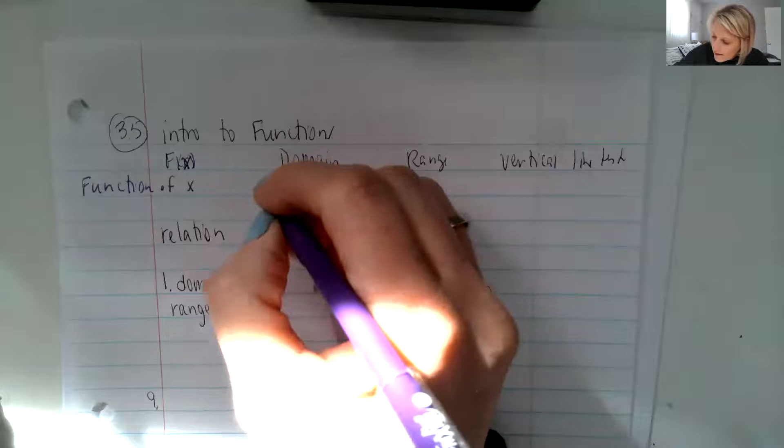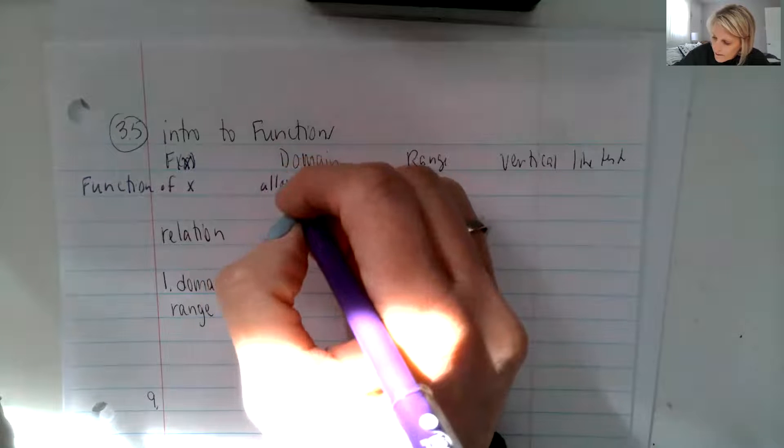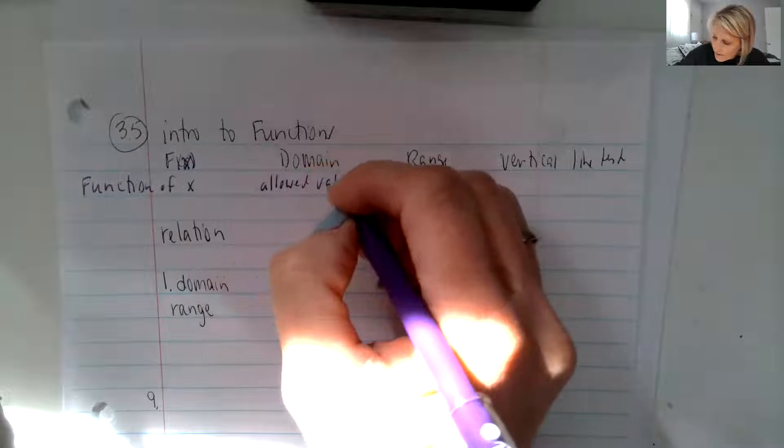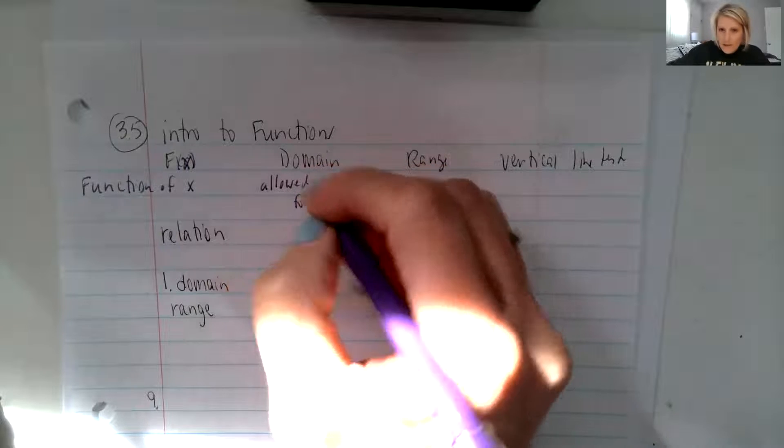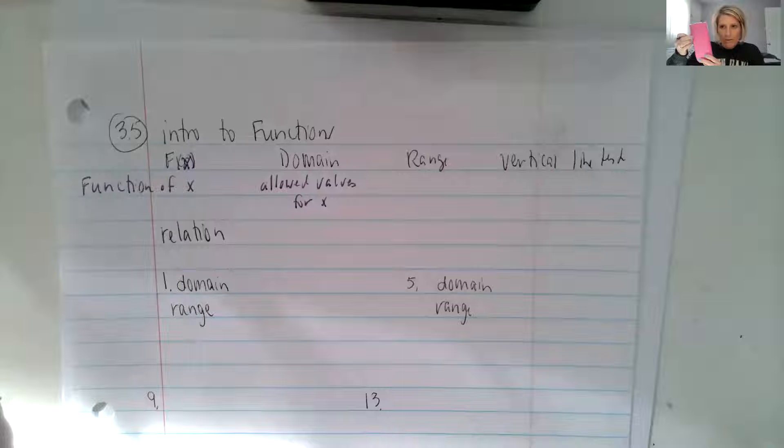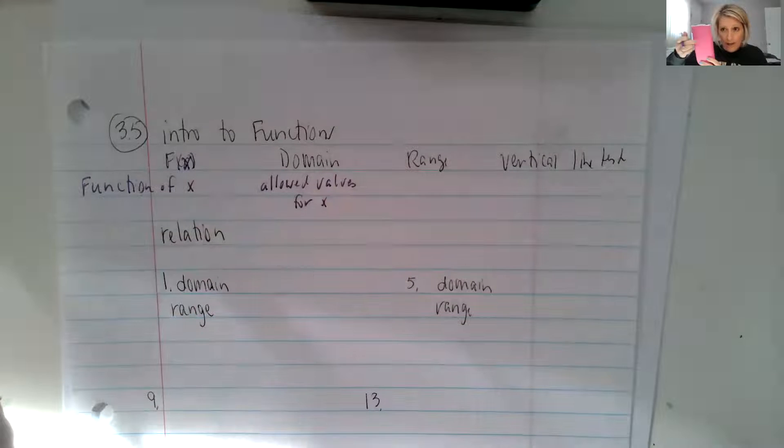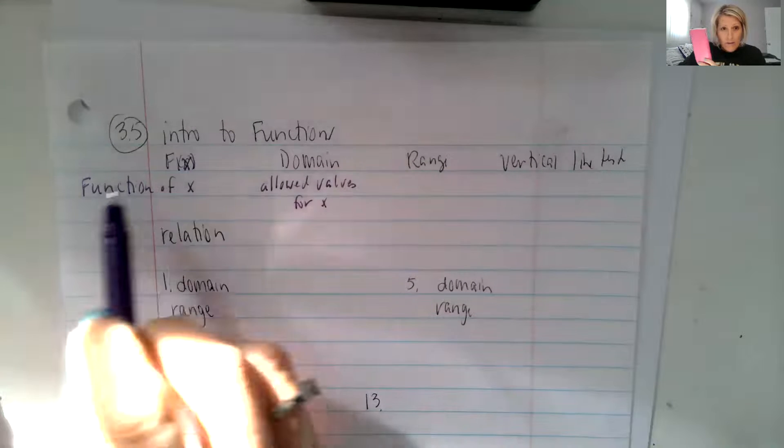So the domain are the allowed values for X. So the case cover may only be able to be made in certain colors. And so those are my domain, those are the colors that can go in for my input. That's what X is.